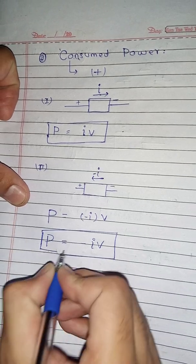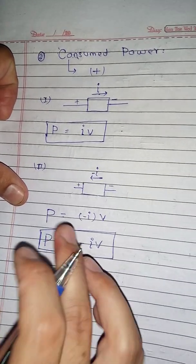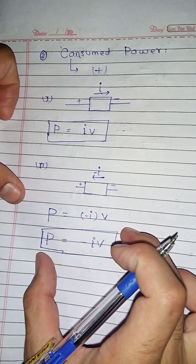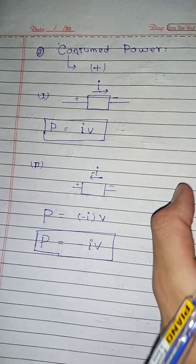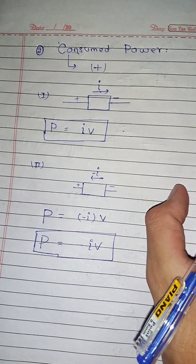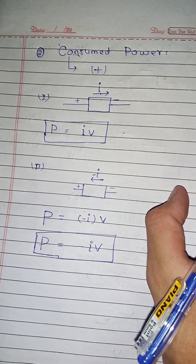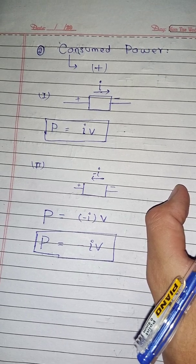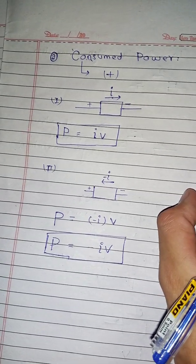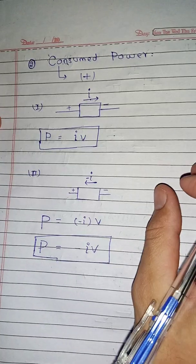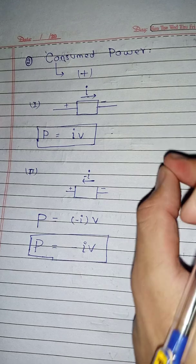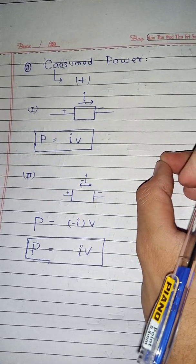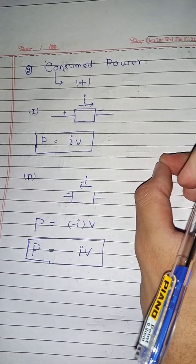So this was all about active and passive sign convention — when power will be positive and when power will be negative. Hope now it's clear to you. For any queries and questions, you can ask in the comment section. Thank you.